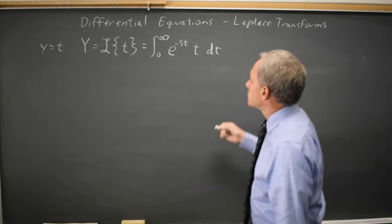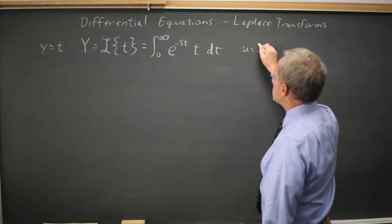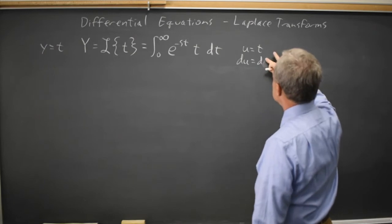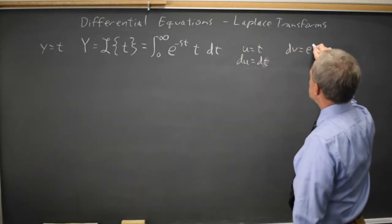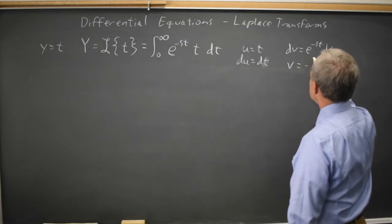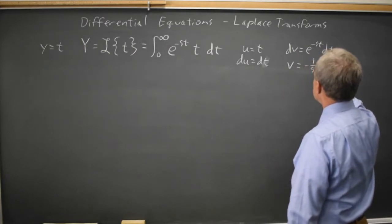We'll integrate this by parts, of course, using u equals t, du equals dt, dv equals e to the negative st dt, and v equals negative 1 over s e to the negative st.